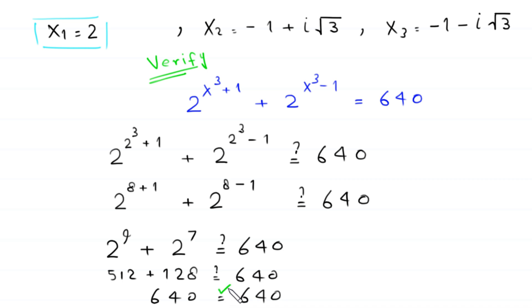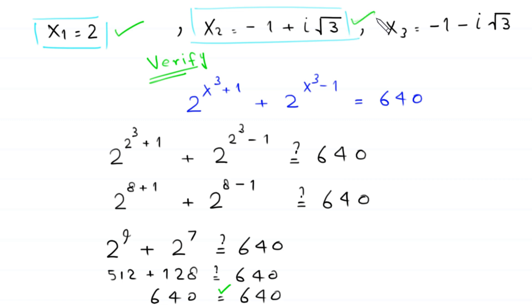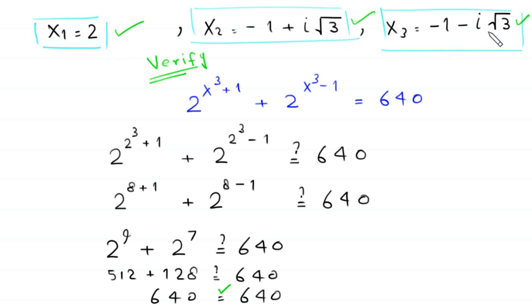512 plus 128 is 640, which equals 640. The left-hand side equals the right-hand side, confirming x₁ equals 2 is a valid solution. Similarly, verifying x₂ equals negative 1 plus i√3 and x₃ equals negative 1 minus i√3 also yields valid solutions. So we have three solutions: 2, negative 1 plus i√3, and negative 1 minus i√3.